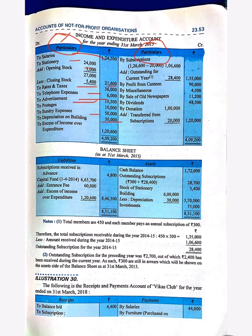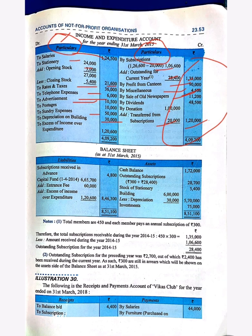Now for subscription: minus 20,000 for donation, and add the outstanding for the current year — it will come to 1,35,000. Profit from canteen same, miscellaneous expense same, old newspaper same, dividend same. For donation: 1,00,000 plus 20,000 which was adjusted from subscription, giving a total of 1,20,000. Credit side total is 4,90,000 and debit side is 4,09,200. When you subtract, the surplus will be 1,20,600.